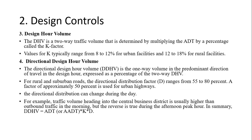The Design Hourly Volume, or DHV, also controls the design. Normally it is 8 to 12 percent of AADT for urban facilities and 12 to 18 percent for rural facilities. There is also Directional Design Hourly Volume, which is the one-way volume in the predominant direction. For rural and suburban roads this ranges from 55 to 80 percent, though most people take 50 percent. When designing a pavement, we use 0.55.